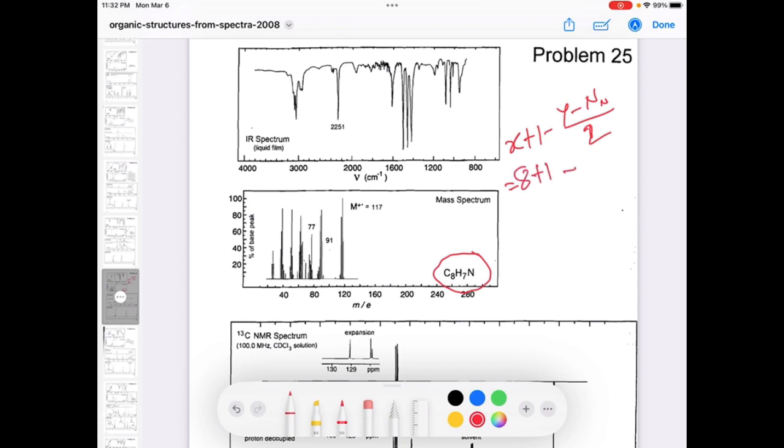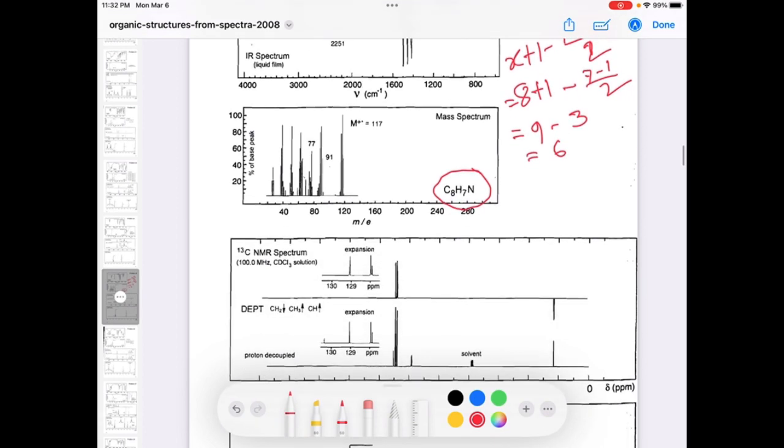Minus Y, the hydrogen number 7, minus number of nitrogen which is 1, all by 2. So 9 minus 6 over 2, that means 3, and ultimately we are getting 6. The rule of thumb as I said before is that if we have degree of unsaturation 4 or more than 4, we can think we have an aromatic ring.